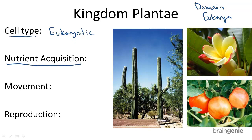How do plants acquire nutrients? Plants are all autotrophic, meaning they develop their own food using the sun, instead of consuming other organisms for energy. And they store their carbohydrates as starch.